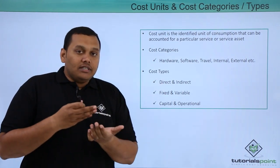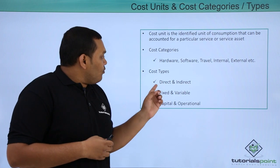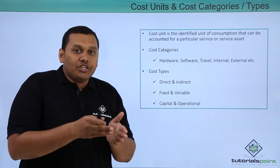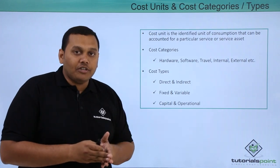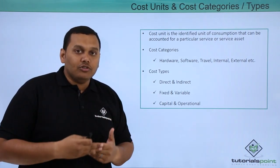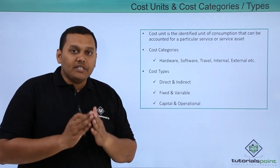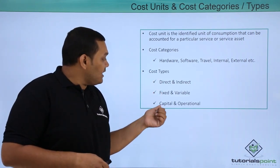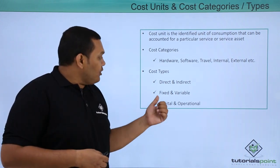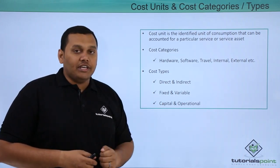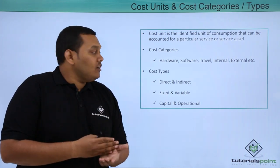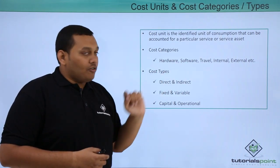Coming to cost types, there are three cost types. The first one is direct and indirect — what is the direct cost involved in purchasing those softwares or hardwares, and also the indirect cost required for those softwares or hardwares. We will be discussing about these cost types clearly in the next slide with a real time example. We also have fixed and variable cost — what are the fixed cost and variable cost involved to buy these hardwares and softwares.